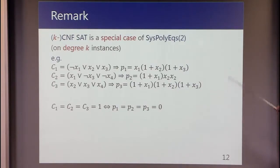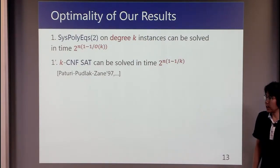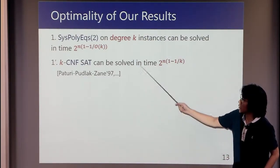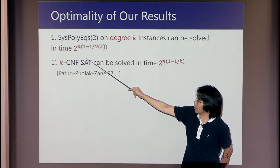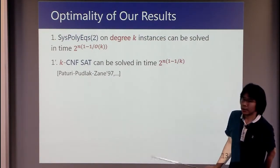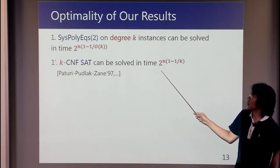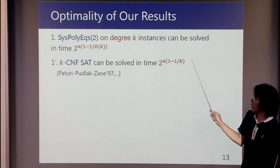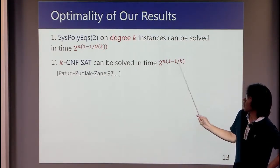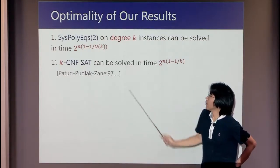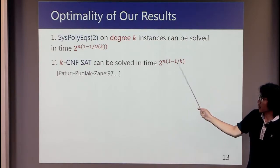This connection explains the optimality of our results. We show SysPolyEqs(2) on degree k instances can be solved in time of this form. It is known that k-CNF-SAT can be solved in time 2^(n(1-1/k)). So if we would like to improve the dependency on k here, we must improve the upper bound for k-CNF-SAT.